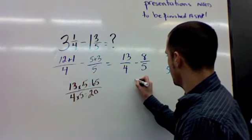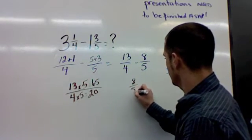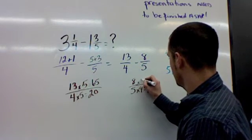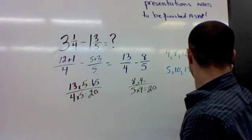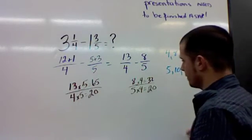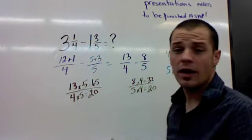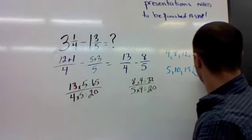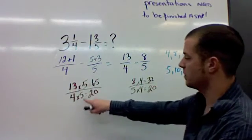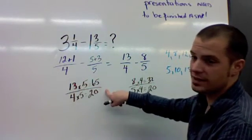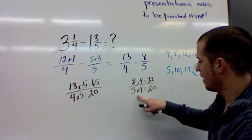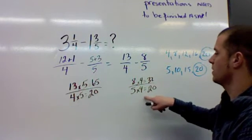And then we do 8 over 5. 5 times 4 is 20. 8 times 4 is 32. Okay, so now that you've done the operations, we've got these two common multiples. So 4 times 5 is 20, and 13 times 5, because what you do to the bottom you do to the top, you get 65 over 20. Okay? Then we have 8 times 4 is 32, and 5 times 4 obviously is 20. What you do to the bottom, you do to the top.